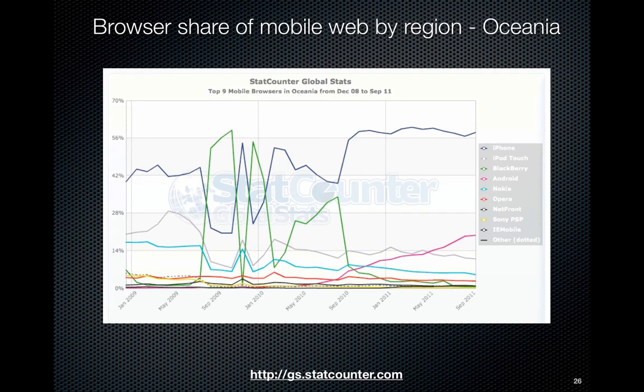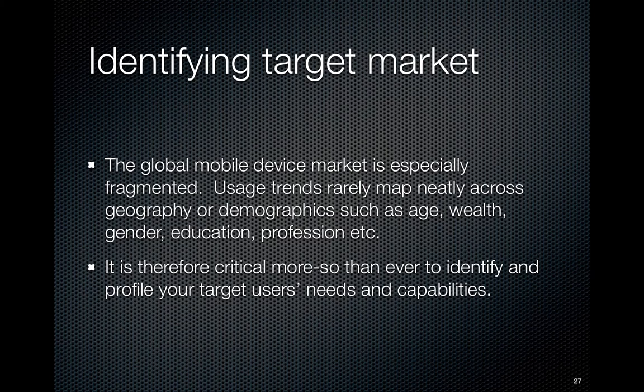The main point is that this stuff varies based on location a lot more than when creating applications for the desktop market, simply because the desktop market has been established much longer. As a general rule, the longer technology is established, the less volatile things are within the market. The global mobile device market is especially fragmented — usage trends rarely map neatly across geography or demographics such as age, wealth, gender, education, and profession. It is therefore critical to identify and profile your target users' needs and capabilities.